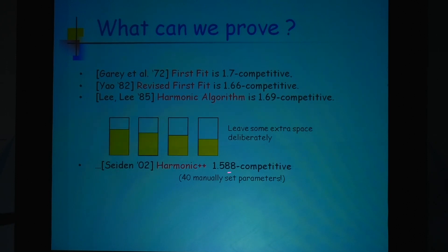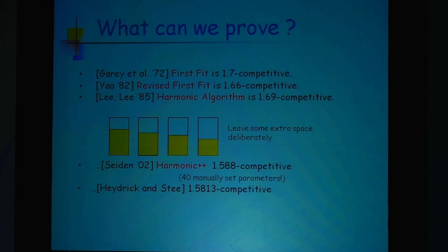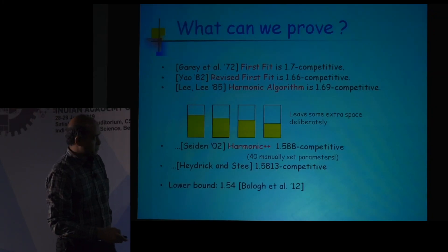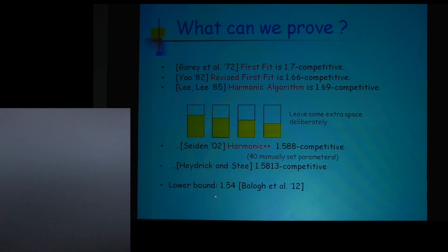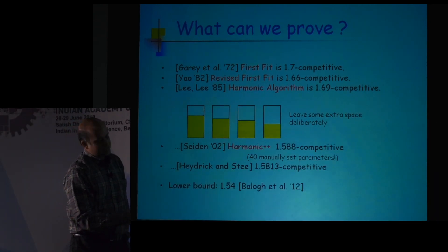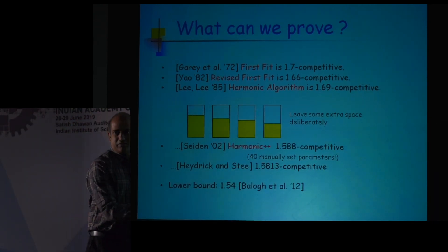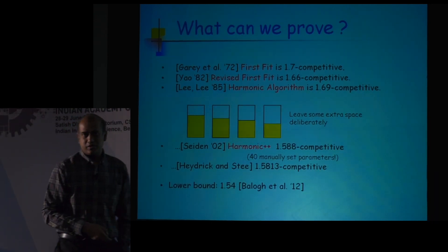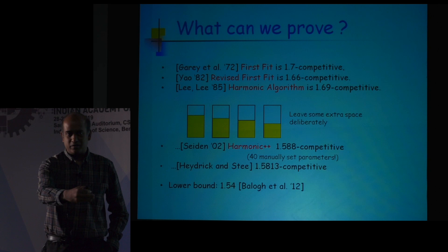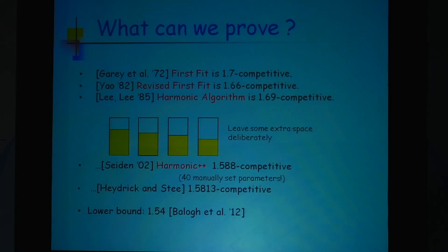Improving these numbers has become quite a challenge — the current state of the art has some improvement in the third digit. There is a lower bound which says that no matter what you do, you can never beat 54%, meaning you cannot do better than 1.54. That is where the state of the art is.